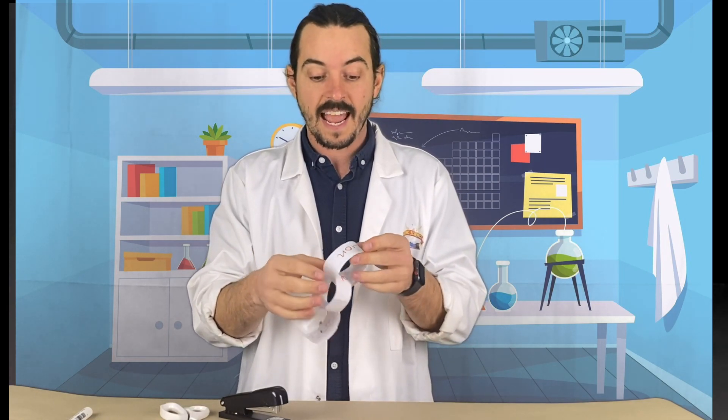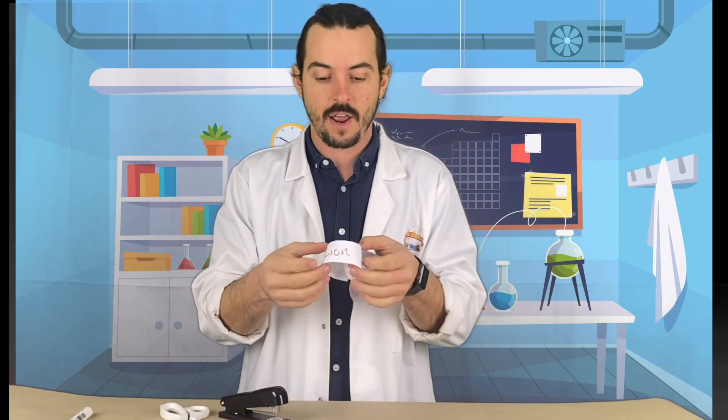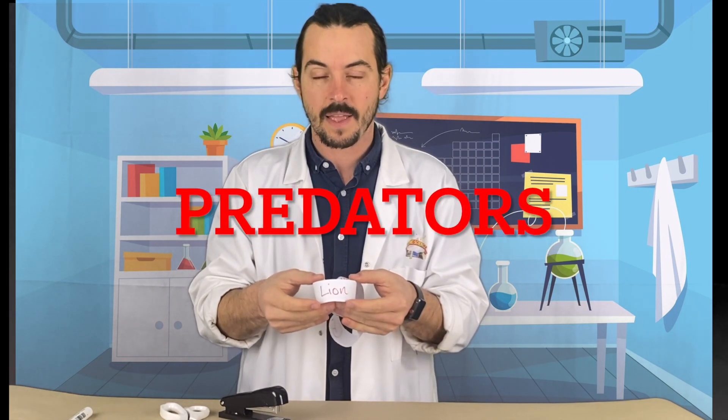And finally, at the top of a food chain, we have things like lions and tigers and owls and some snakes and alligators and crocodiles, sharks. All of these are examples of predators. A predator is at the end of a food chain where it doesn't get eaten by anything else. It wouldn't normally be hunted by something else.